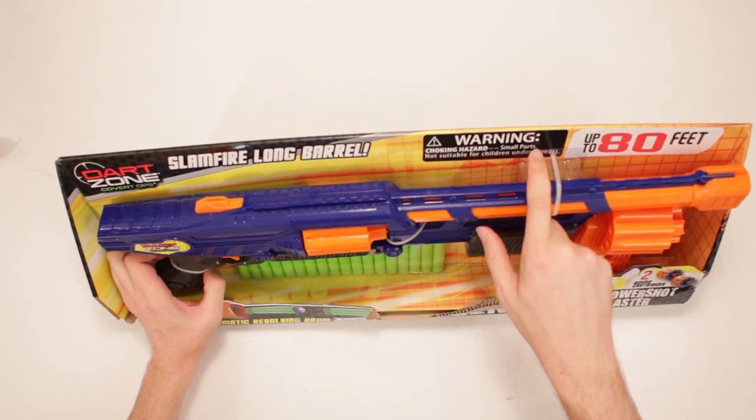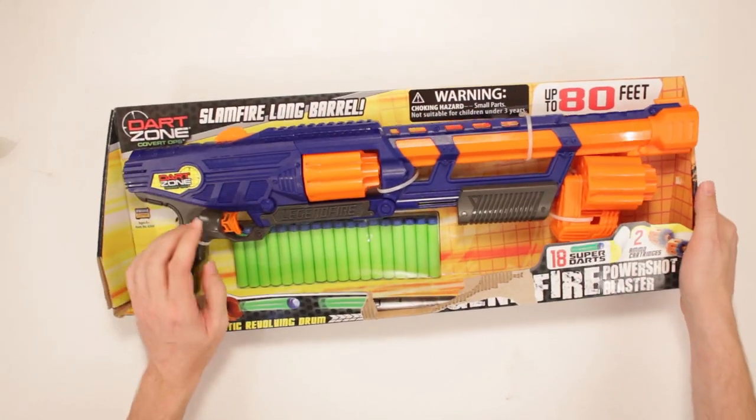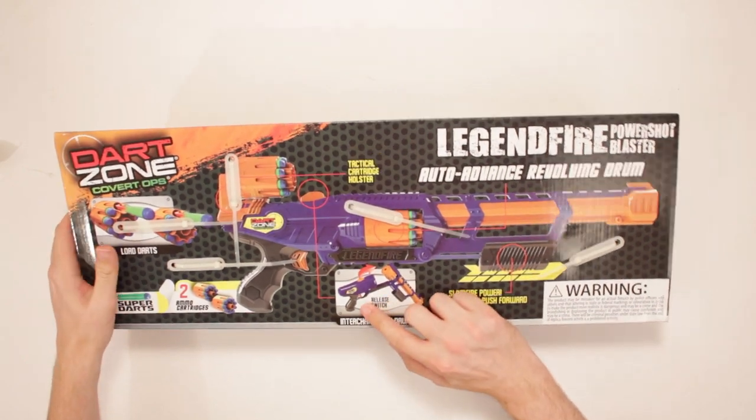Slam fire long barrel! That's for children that have choking hazards. No, not for them. Don't give it to them. It fires up to 80 feet. Comes with 18 super darts and two ammo cartridges. And then there's a release switch on the back there.